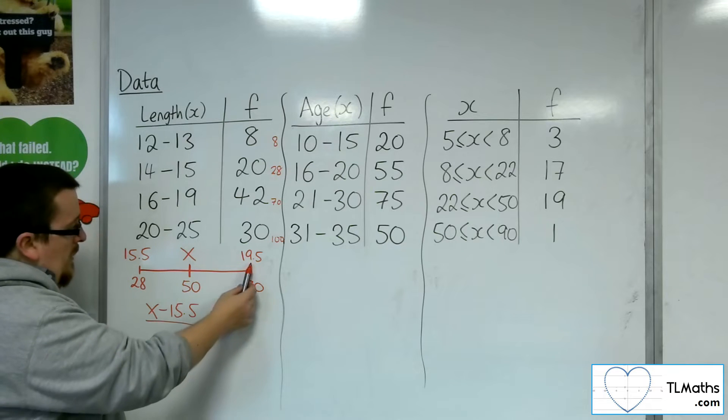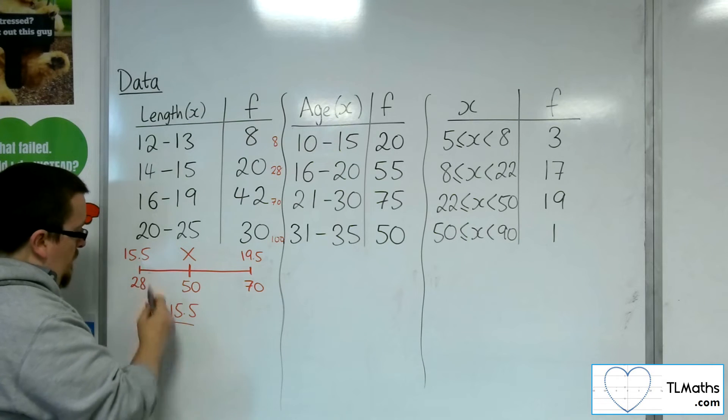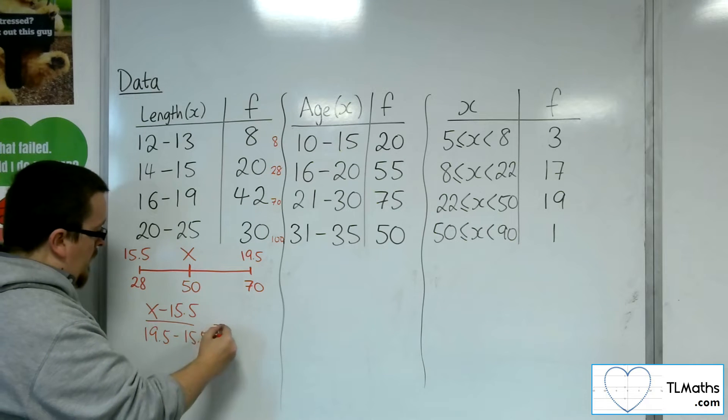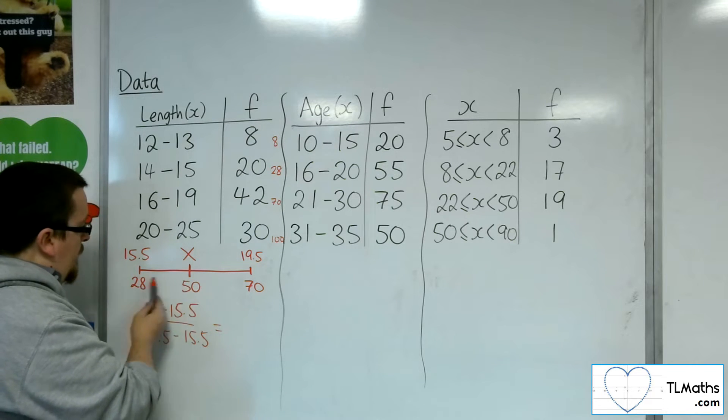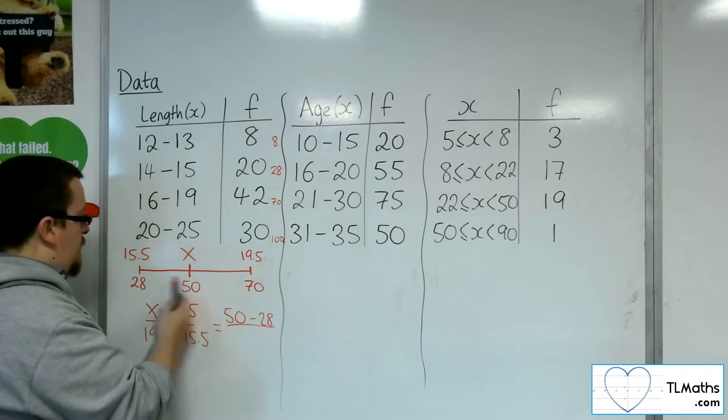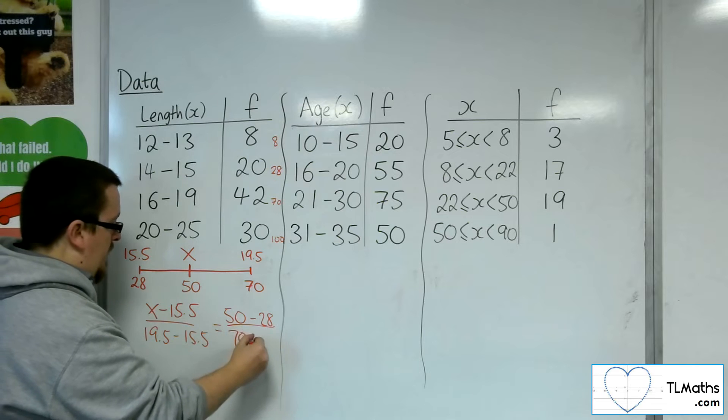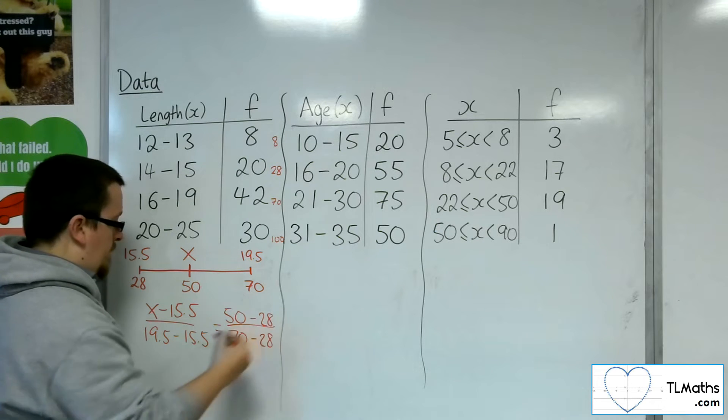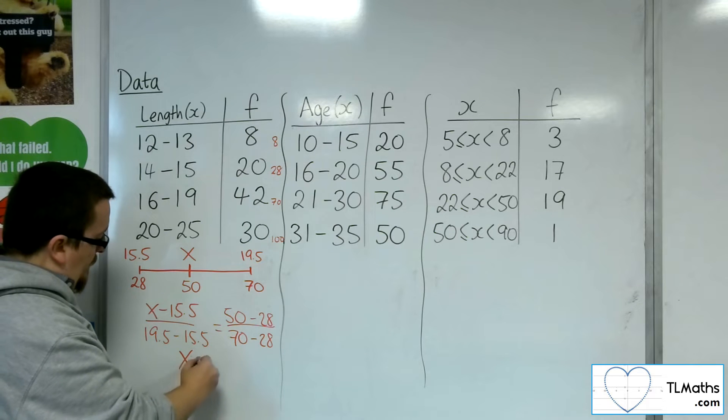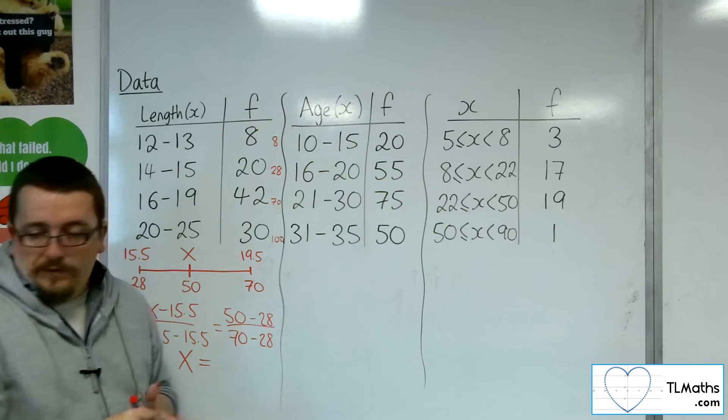divided by the difference in that group, so 19.5 to 15.5, will be the same as the difference between those two, 50 and 28, over the difference in those two, 70 to 28. And that gives you an equation to solve, to find your median value, x in this case.